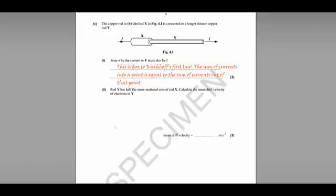Part II tells us that rod Y has half the cross-sectional area of rod X, so we need to calculate the mean drift velocity of electrons in Y. You'll see there's only one mark here. It's not asking us to go right through the calculation again. What we can say is that I equals A-N-E-V. So we rearrange that to get V equals I divided by A-N-E, as we did earlier.